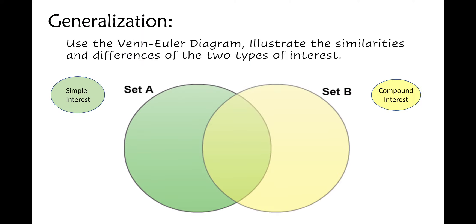For your generalization, using a Venn diagram, illustrate the similarities at the intersection of the two circles and write the differences of the two types of interest on their corresponding circles, where set A (green) is for simple interest and set B (yellow-green) is for compound interest.